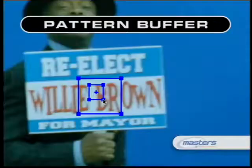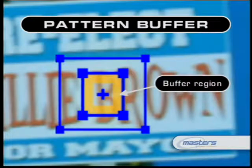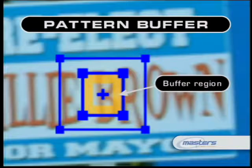When dragging out your pattern window, don't just surround the pattern you're trying to track — leave a little buffer around it. This is important because we're not simply tracking a pattern; we're tracking the difference between the pattern and the area that surrounds it. This buffer also helps if there's any imperfection, slop, or drift, giving the computer something to work within.